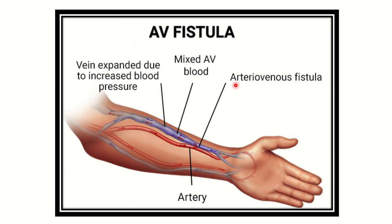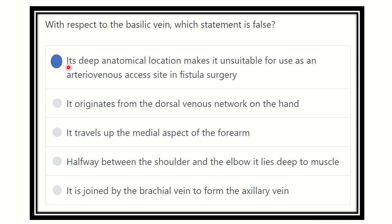In this area, the cephalic vein and basilic vein both lie superficial — that is, superficial to the deep fascia of the arm and forearm. The basilic vein only lies deep in the mid-arm area and upward. Therefore, the first option — that its deep anatomical location makes it unsuitable as an arteriovenous fistula access site — is not true, because in the forearm region the basilic vein is actually superficial.